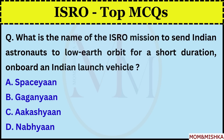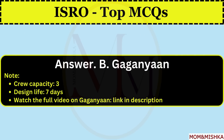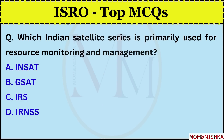What is the name of the ISRO mission to send Indian astronauts to low Earth orbit for a short duration onboard an Indian launch vehicle? Gaganyaan, option B. The crew capacity is 3 and its design life is 7 days. Which Indian satellite series is primarily used for resource monitoring and management?